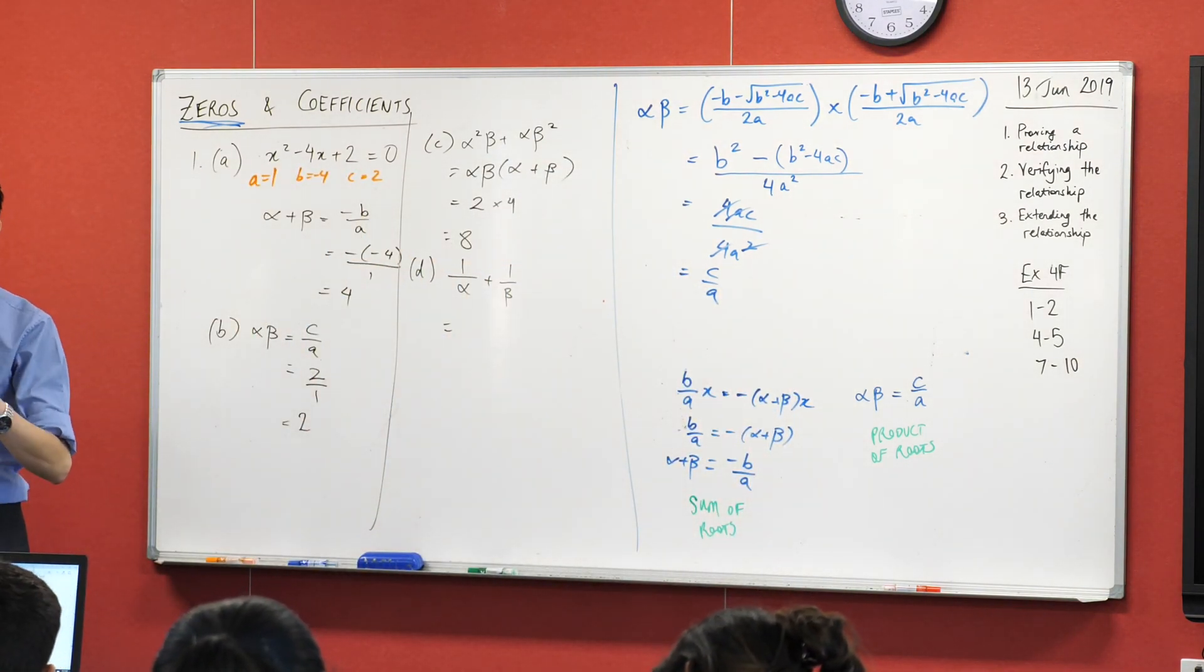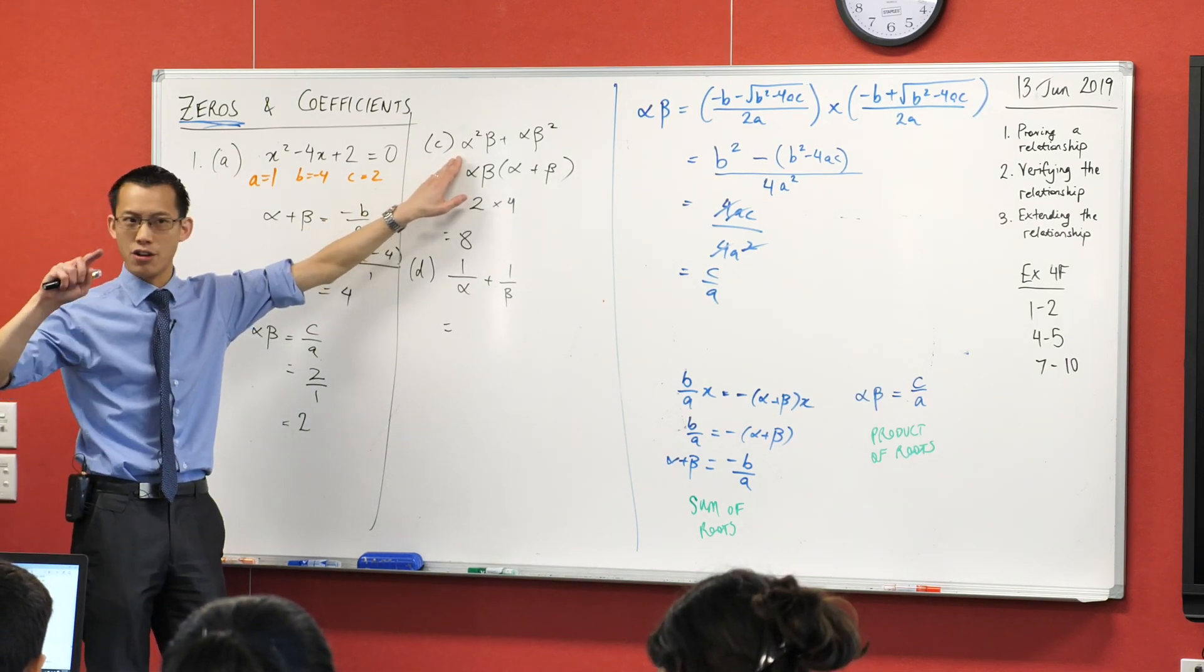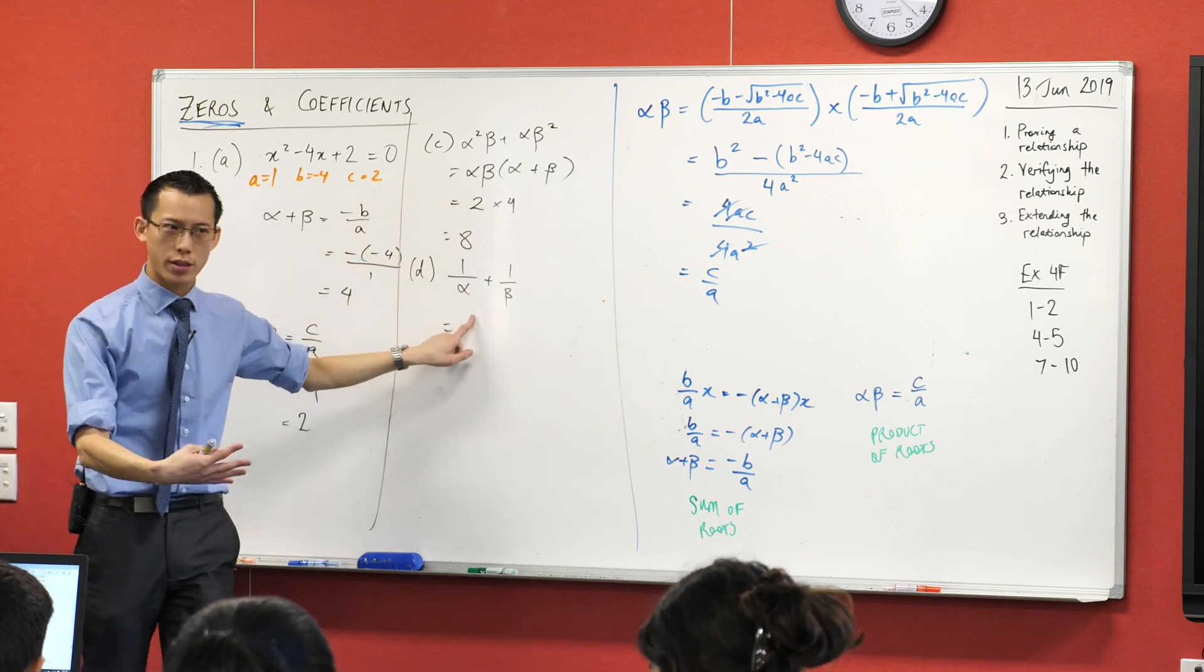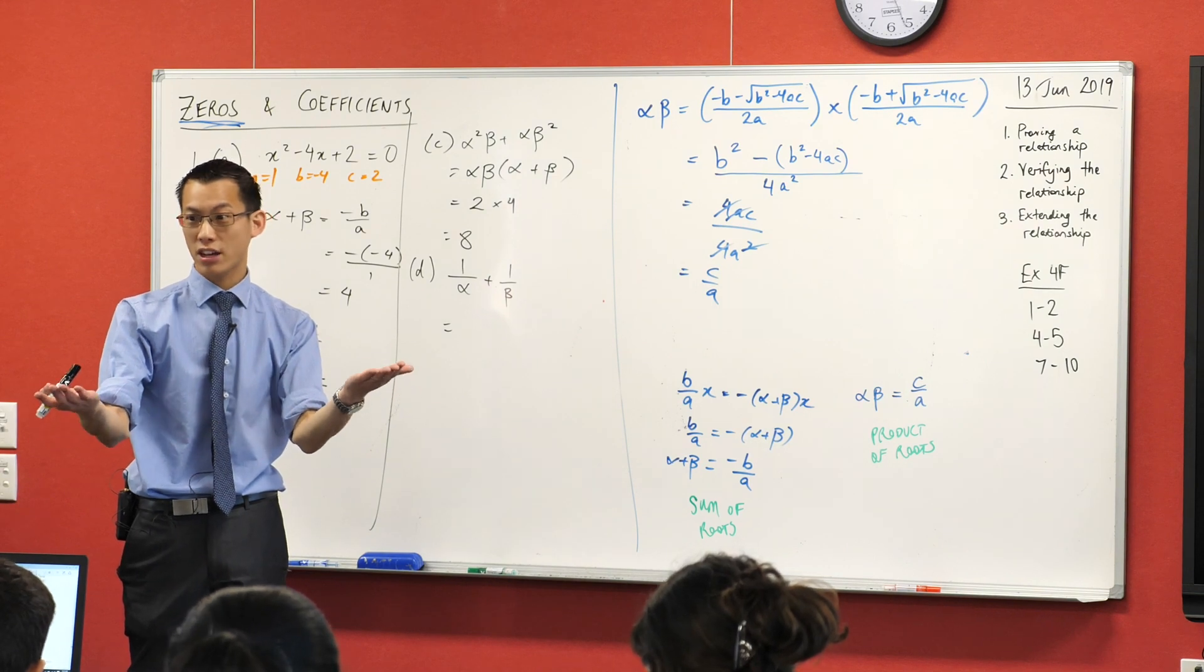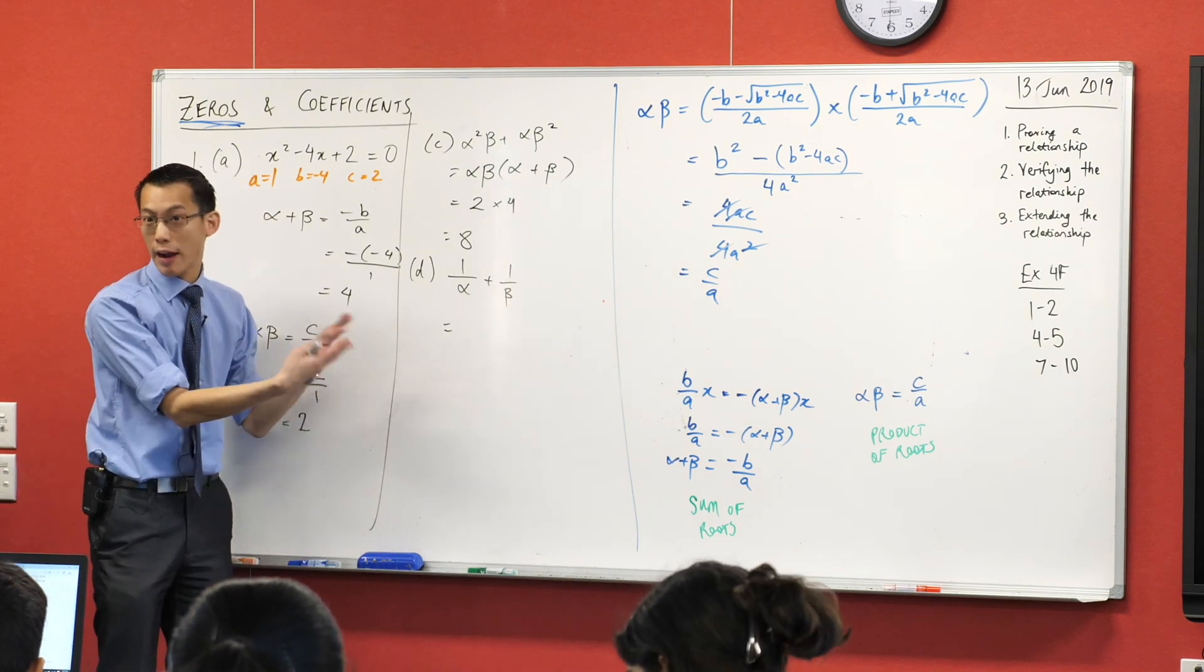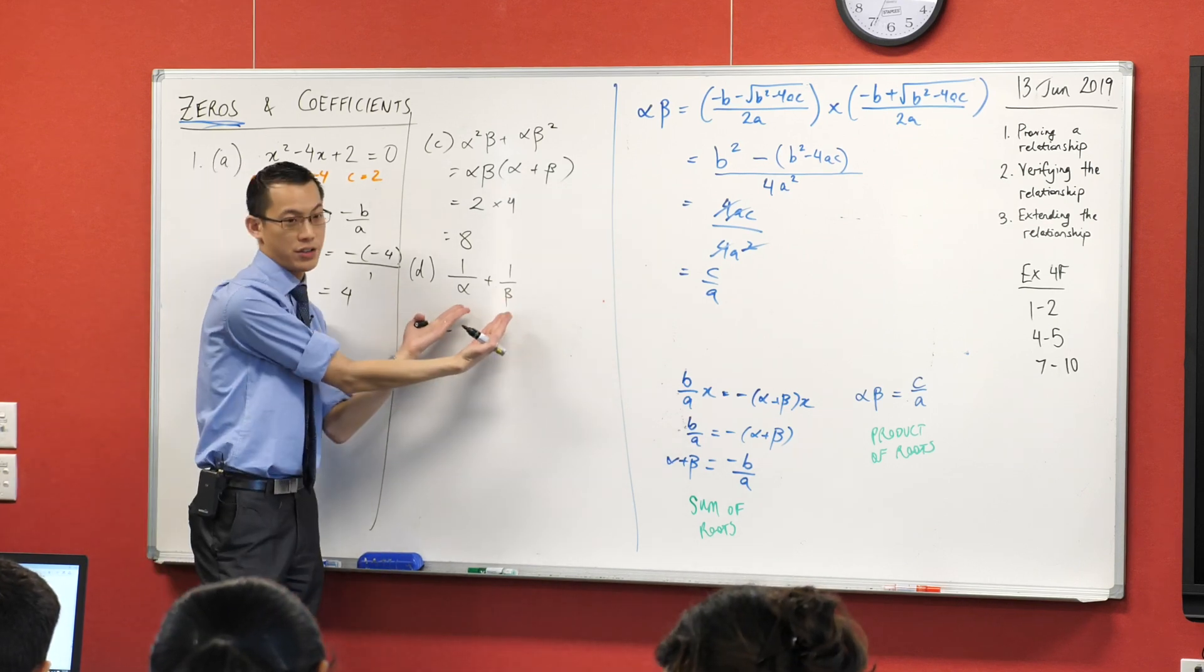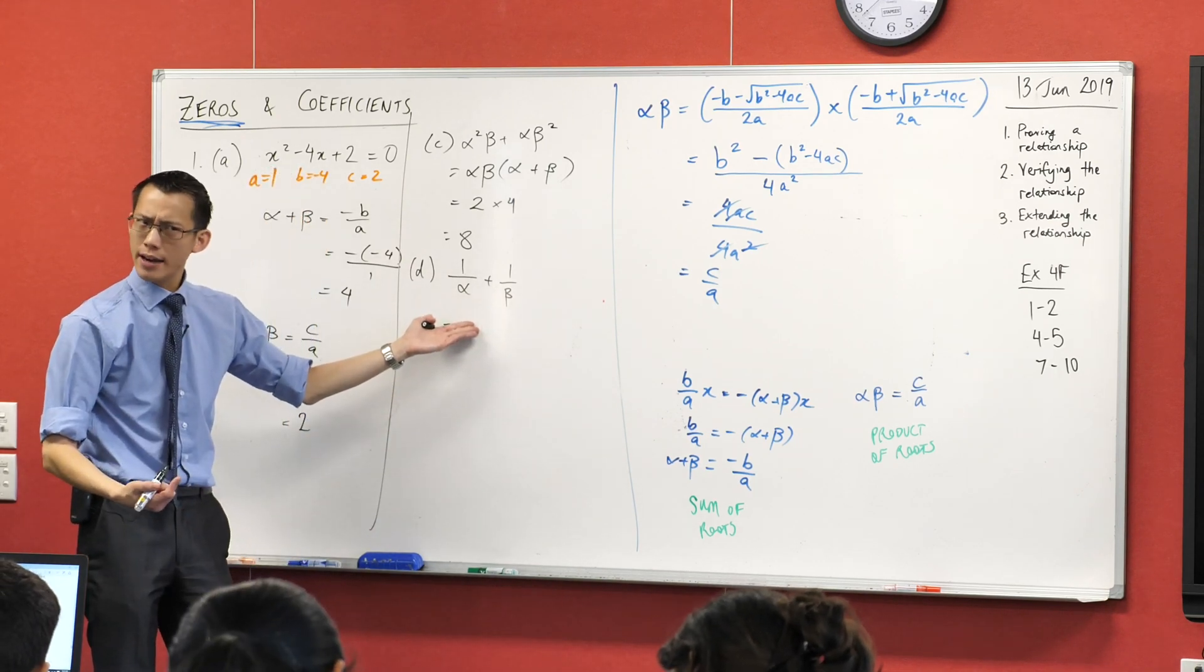Here's part D, and hopefully the astute among you have noticed that just like with C, and your instinct was, I know algebra, I can factorize this, which helped us out. Your instinct when dealing with two fractions that have different denominators is you should get a common denominator. That's the only way you really have to deal with these fractions of different denominators. What would be the common denominator for two fractions like this? Alpha beta.